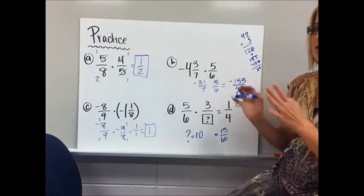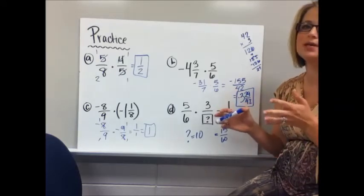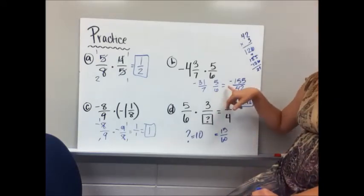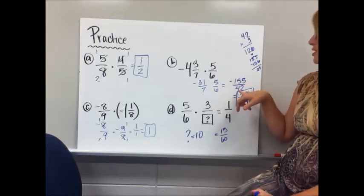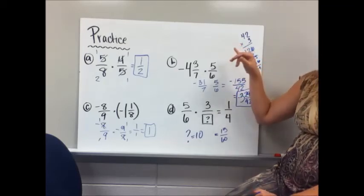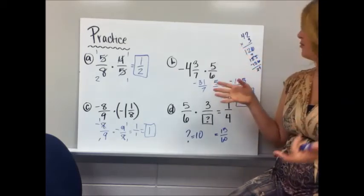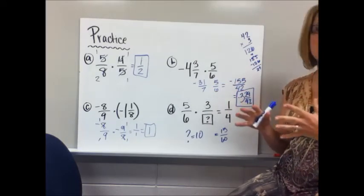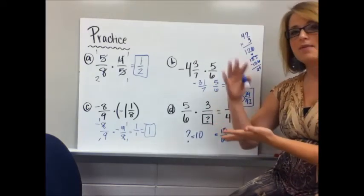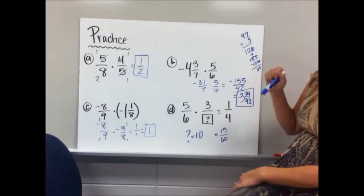I look diagonally, and nothing is going to cross-simplify, which is kind of disappointing because those are some big numbers. I get negative 155 over 42. You can see where I kind of estimated maybe it goes in there about three times because I thought 42 kind of close to 50, and I counted by 50. That gets 126.